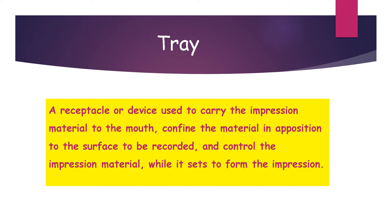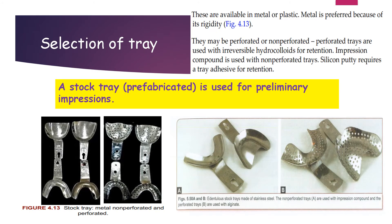A tray is a receptacle or device used to carry the impression material to the mouth, confine the material in position to the surface to be recorded, and control the impression material while it sets to form the impression. Trays are available in metal or plastic — metal is preferred because of its rigidity. Stock trays include metal perforated and non-perforated trays.